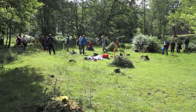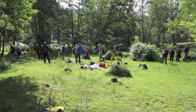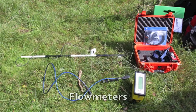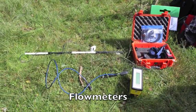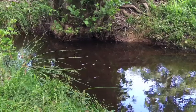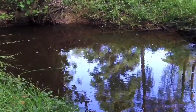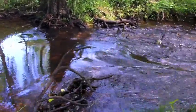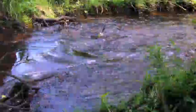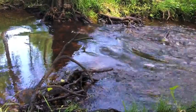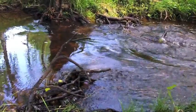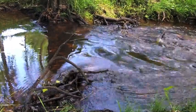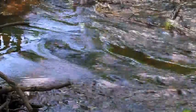Here is the survey area, and the first area of investigation is flow in a river. We had two types of flow meter available. If you look at this section of the river, you can see the flow varies quite considerably. What do you think are the key factors for variations in flow in a river?